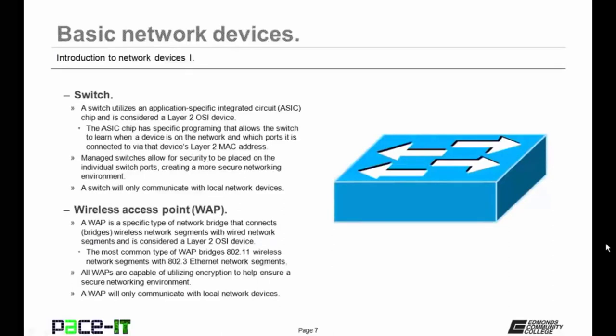A switch utilizes an application-specific integrated circuit chip, or an ASIC chip, and it is considered a Layer 2 OSI device. The ASIC chip has specific programming that allows the switch to learn when a device is on the network and which port that device is connected to via that device's Layer 2 MAC address. Managed switches allow for security to be placed on the individual switch ports, creating a more secure networking environment. One caveat with switches, though: a switch will only communicate with local network devices, meaning it cannot communicate with remote networks.